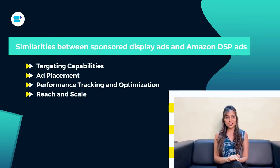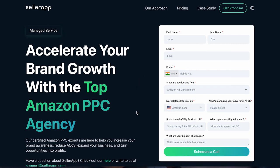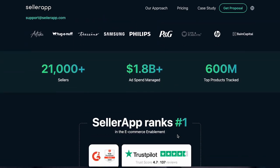Regarding reach and scale, both options allow reaching a vast audience on Amazon. Sponsored Display ads target customers actively shopping on Amazon, while Amazon DSP expands reach beyond Amazon, targeting customers across the internet using partner sites and apps connected to Amazon's network.